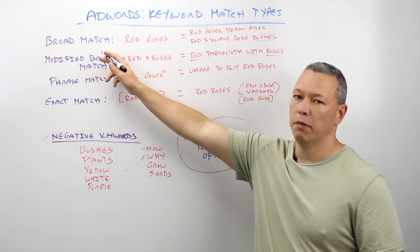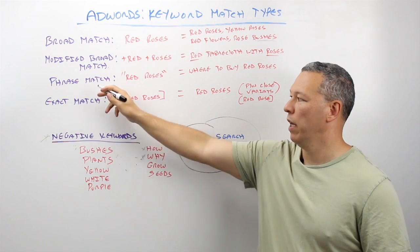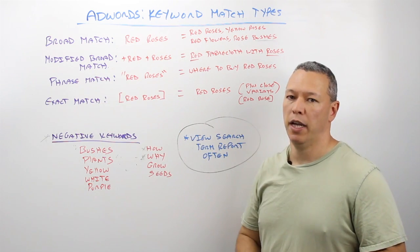We have four types: broad match, modified broad match, phrase match, and exact match.